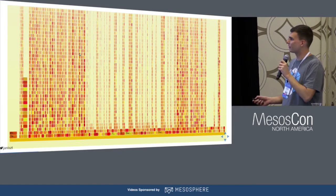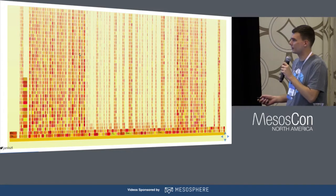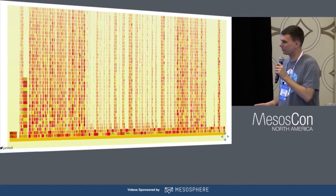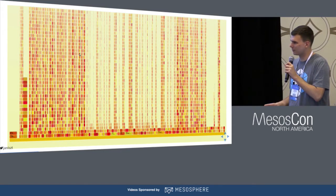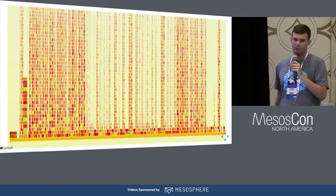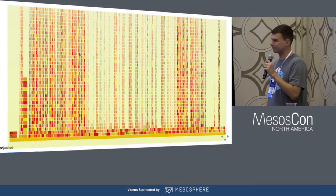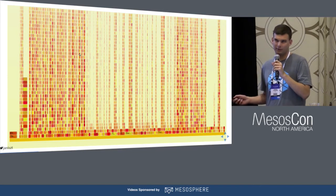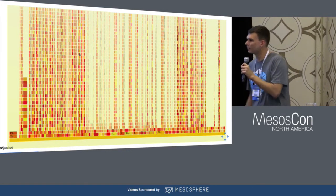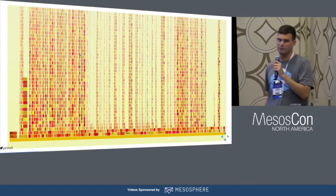Once you've got the flame graph, you can't really tell much from it visually. But here's one important point: there is a method native library block. If this block gets wider, there is probably some regression in the method native lib and you need to downgrade. It's never happened to us — there were some leaks in the method native lib, but that hasn't hit us in production.